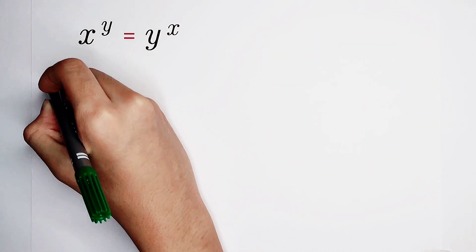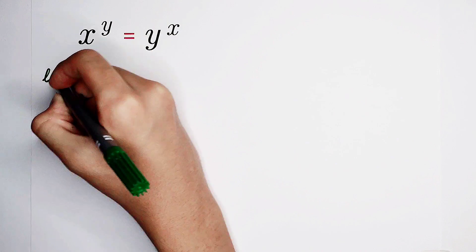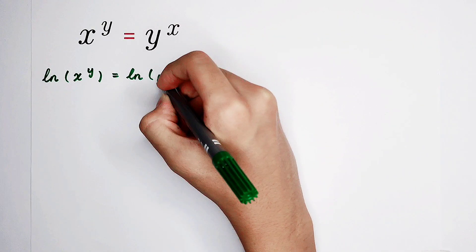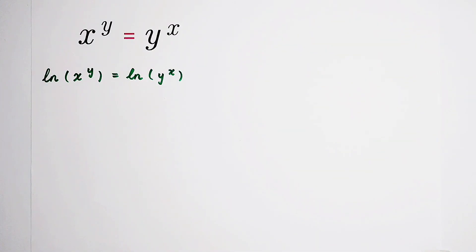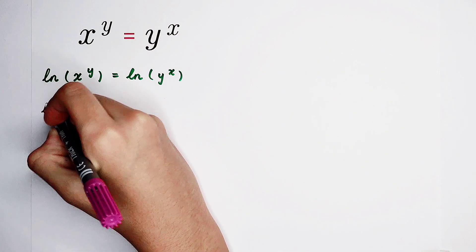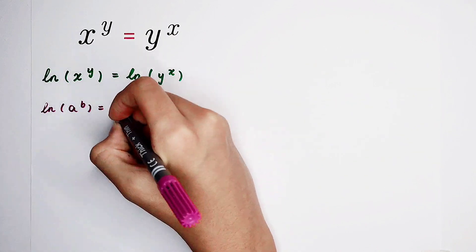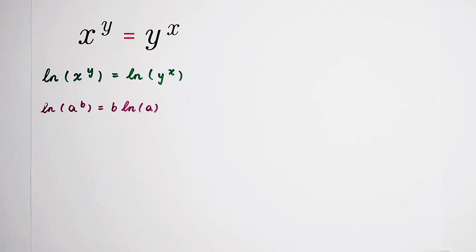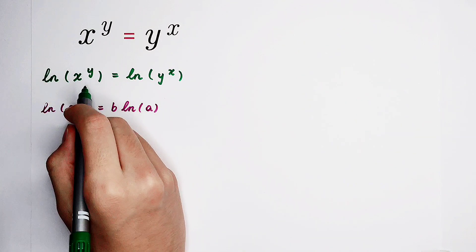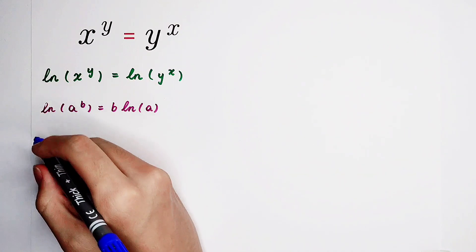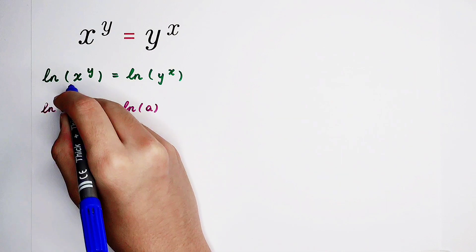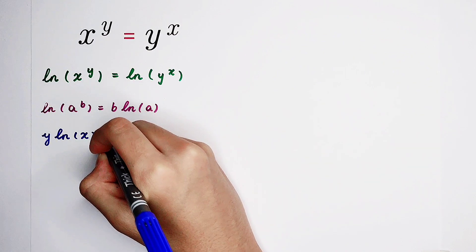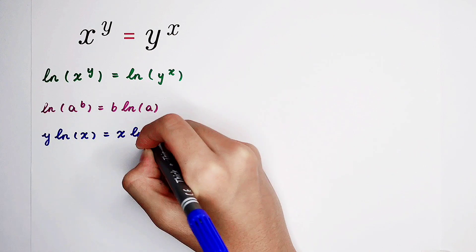If we take a natural log, the left-hand side is the natural log of x to the power of y, and the right-hand side is the natural log of y to the power of x. Remember the formula: the natural log of a to the power of b equals b times the natural log of a. Using this, the left-hand side becomes y times the natural log of x, and the right-hand side becomes x times the natural log of y.